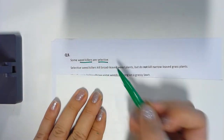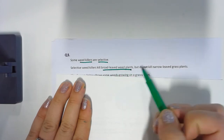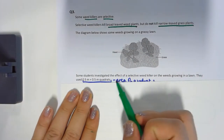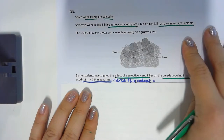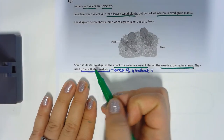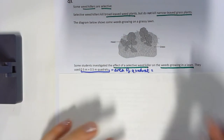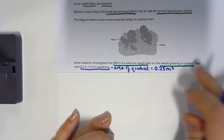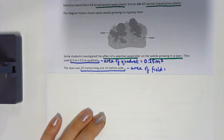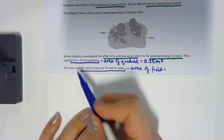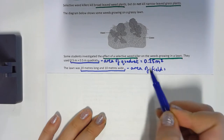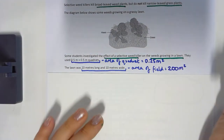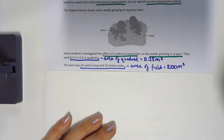Question three: some selective weed killers kill broad-leaf weed plants but do not kill narrow-leaf plants. Students investigated the effects of selective weed killer on weeds in a lawn using a 0.5 m by 0.5 m quadrat. Note the area of the quadrat: 0.5 times 0.5 equals 0.25 meters squared. The lawn measured 20 meters long and 10 meters wide, so the area of the lawn is 200 meters squared.